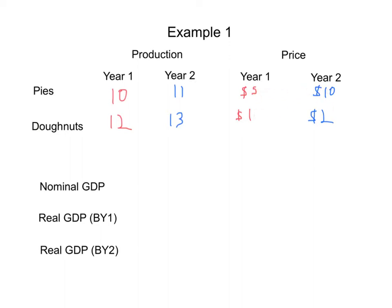So in year one, the nominal GDP was 10 pies times $5 plus 12 donuts times $1 equals $62. The year two nominal GDP is 11 pies times $10 and 13 donuts times $2. So that gives us a year two nominal GDP of $136. Looks like massive growth, right? In fact, the percentage growth here is roughly 119%.